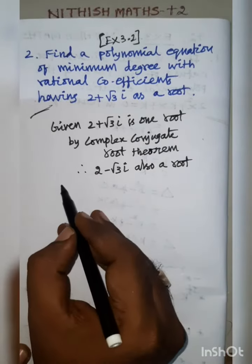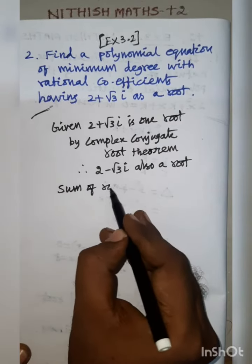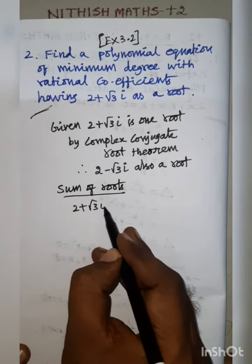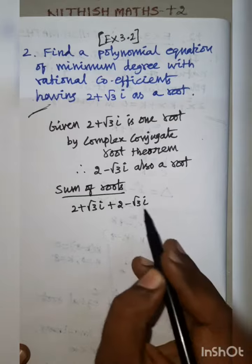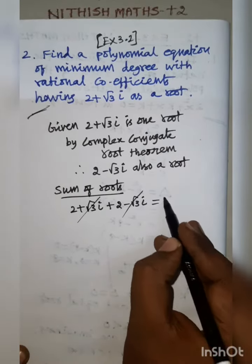We are having two roots. Sum of roots: 2 plus root 3 i plus 2 minus root 3 i. Root 3 i minus root 3 i cancel. 2 plus 2 is 4.